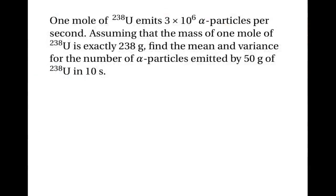One mole of uranium-238 emits about 3 million alpha particles per second. Assuming that the mass of one mole of uranium-238 is exactly 238 grams, let's find the mean and the variance for the number of alpha particles emitted by 50 grams of uranium-238 in 10 seconds.